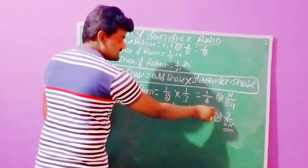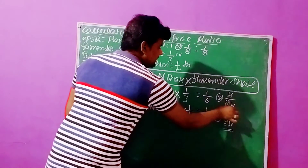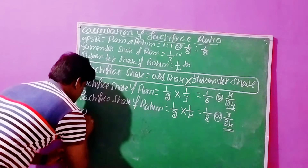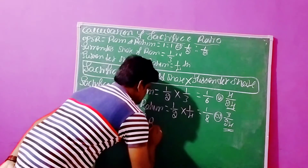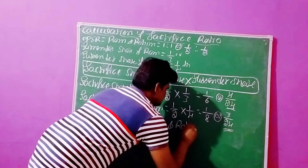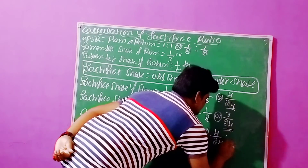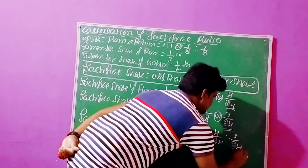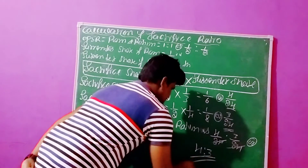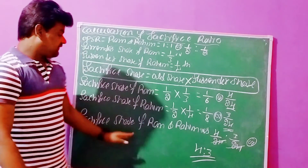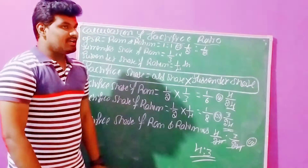Now both denominators are equal, so we can simplify. The sacrifice share of Ram and Rahim is 4 by 24 is to 3 by 24. Cancelling the 24s gives us 4 is to 3. So the sacrifice ratio of Ram and Rahim in the partnership is 4 is to 3. This is the solution to the question. Thank you.